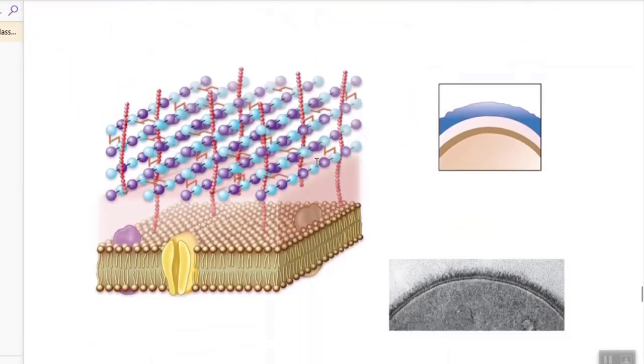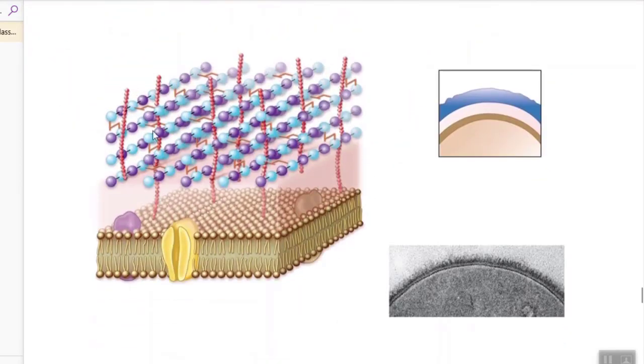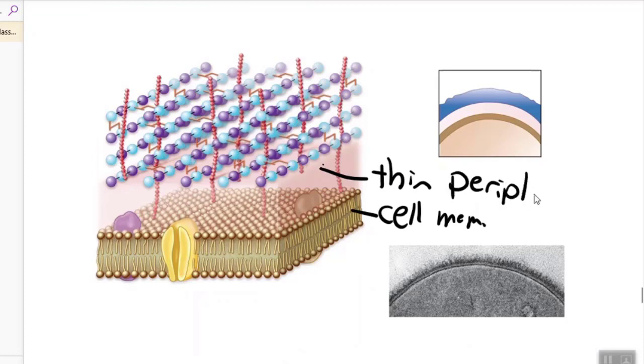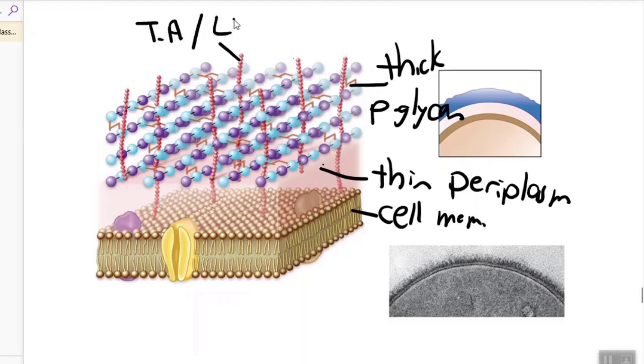So overall, pretty picture per usual. We have, again, the inside, the cell membrane is here, followed by a very thin periplasm. Remember, this holds a few proteins inside of it. Then here we have this very thick peptidoglycan. These little red rope-like things are the techoic acids and lipotechoic acids, which are unique to gram-positive bacteria. The best way to learn this is by drawing it.